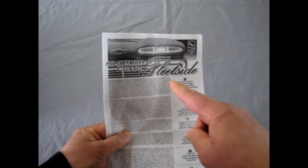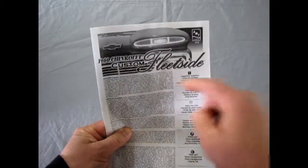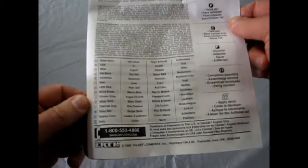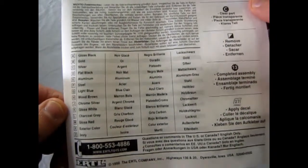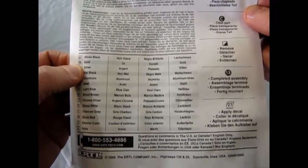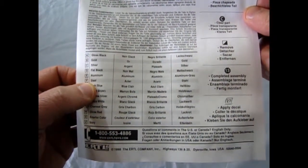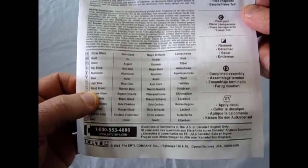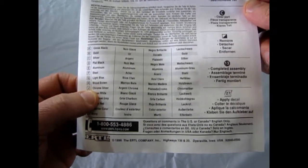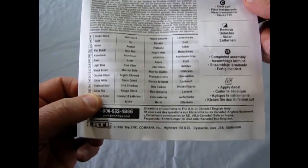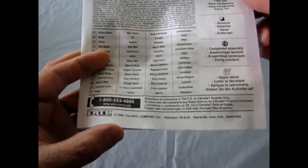Now, of course, you get a picture of the real truck with a nice Fleet Side script there, and a call-out sheet for all the paints you are going to need. A is gloss black, B is gold, C is silver, D is flat black, E aluminum, F steel, G light blue, H wood brown, J chrome silver, K is gloss white, L is charcoal gray, M is gloss gray, X is the exterior color, and Z is ivory.